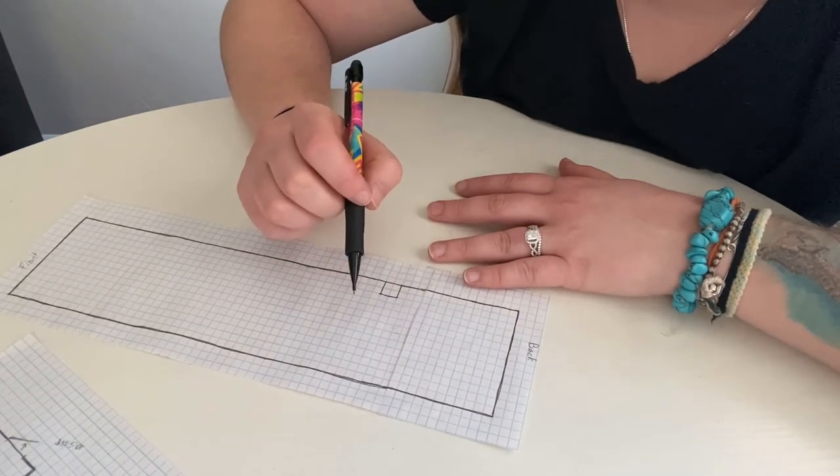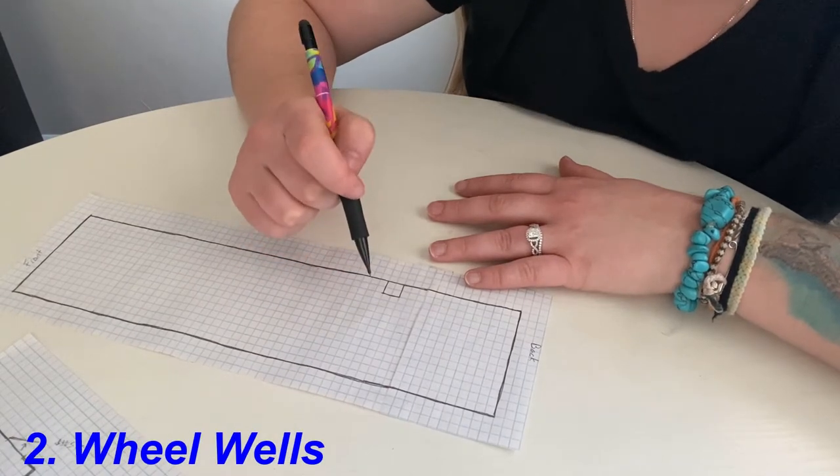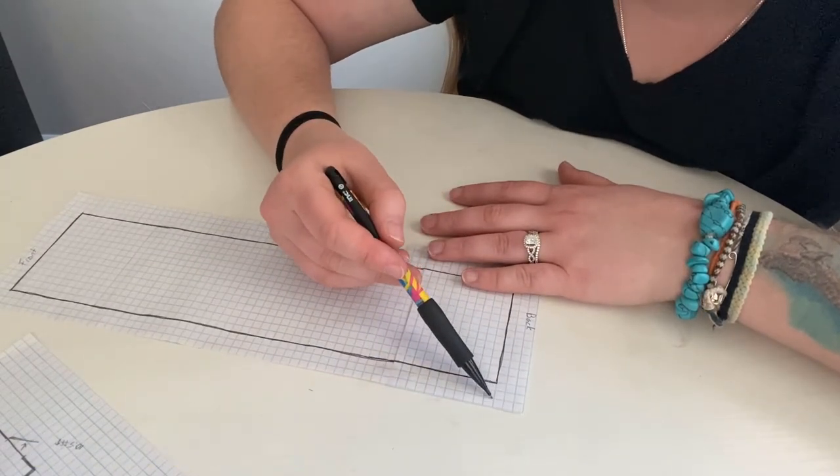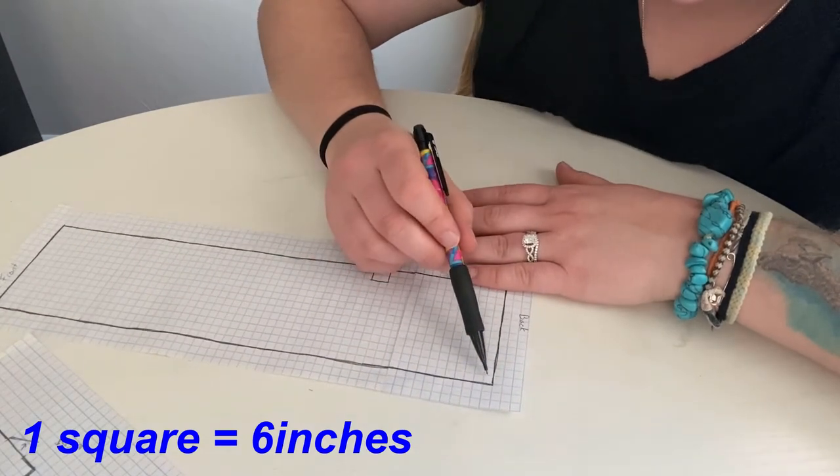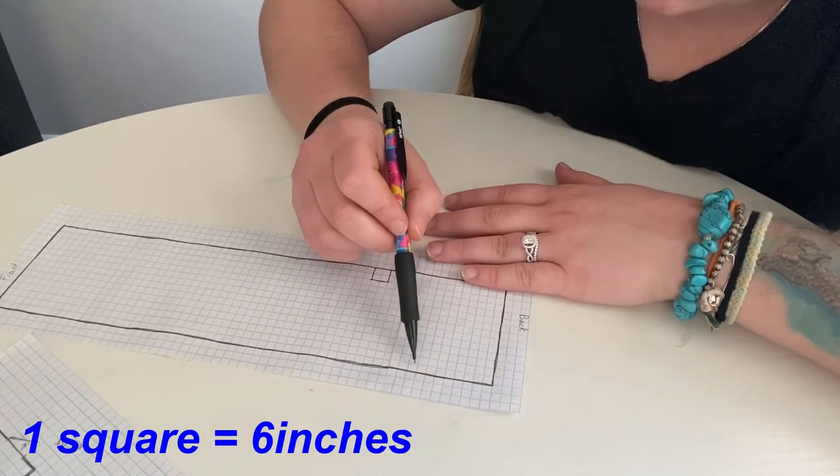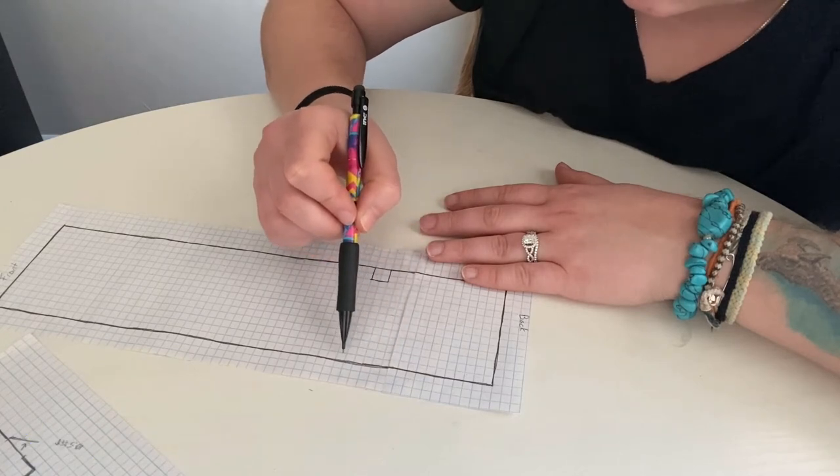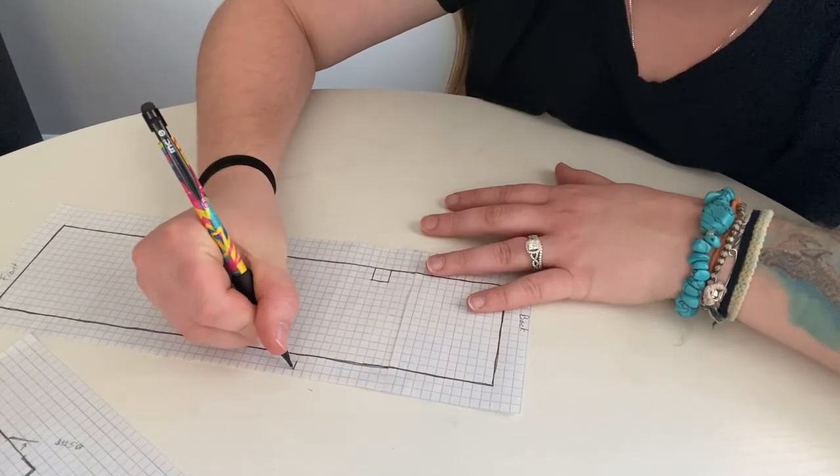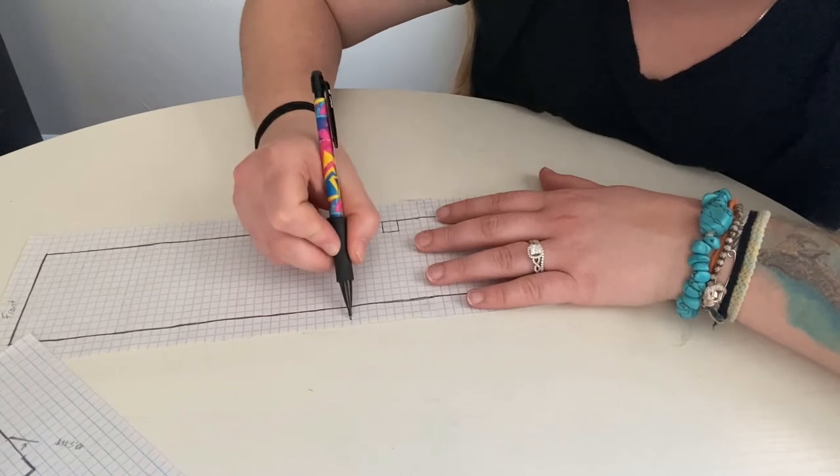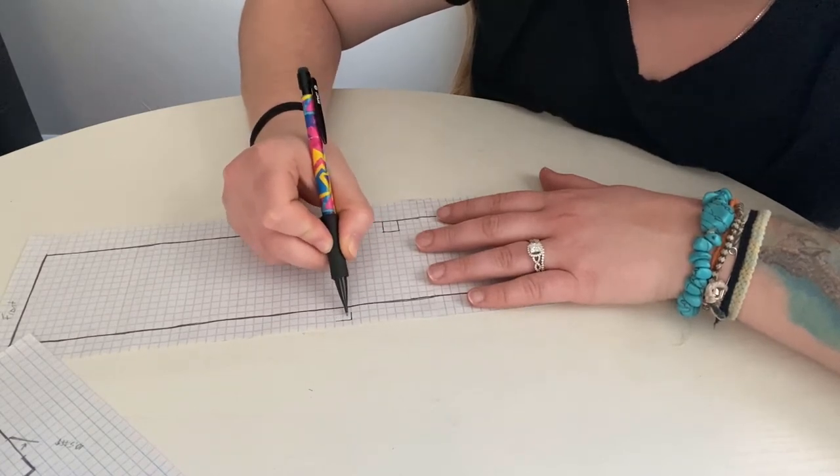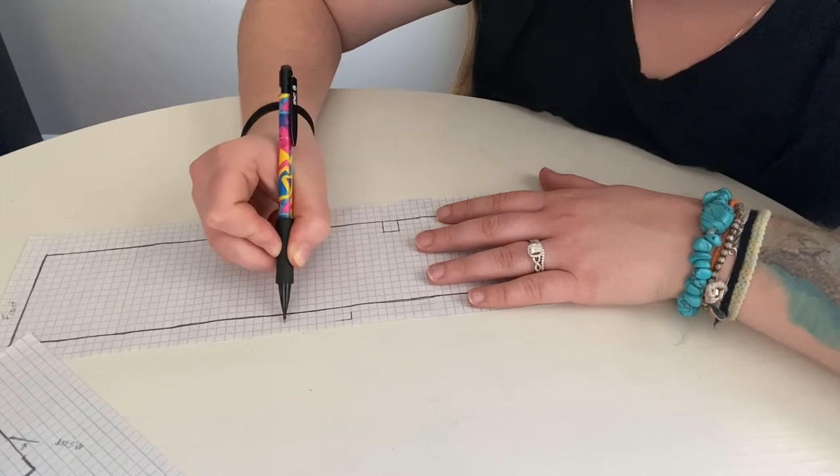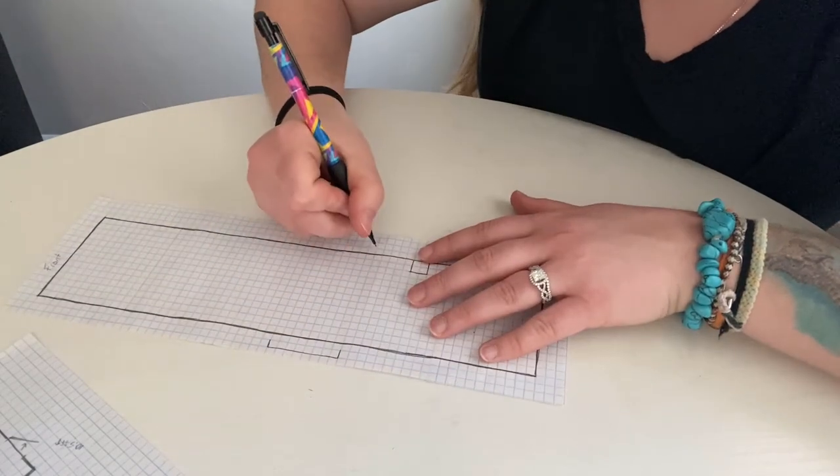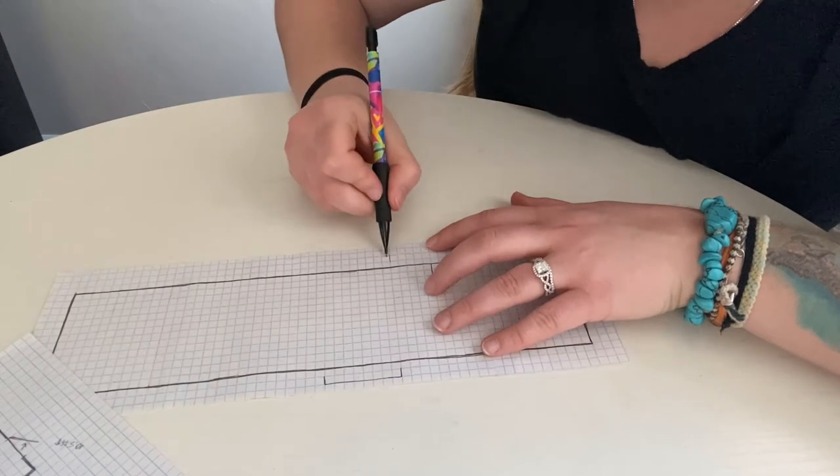And then we also have to go around the wheel wells. And on our bus, they're about ten and a half feet from the back. And remember, each one of these squares I have marked as six inches or half a foot. So, we have one, two, three, four, five, six, seven, eight, nine, ten, and then a half. We'll mark that on the outside. And they're about four feet long. One, two, three, four.